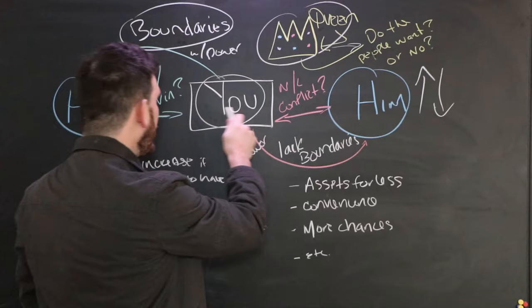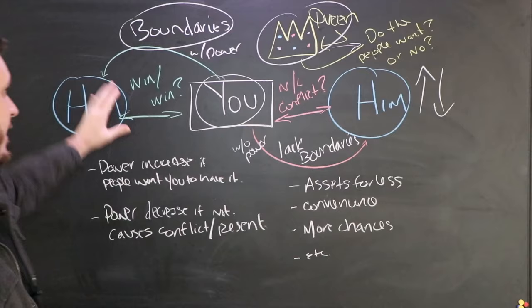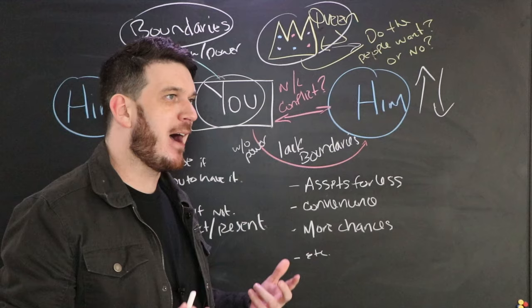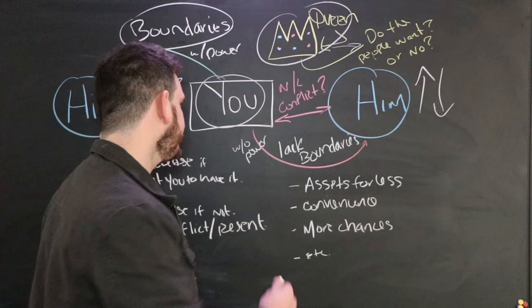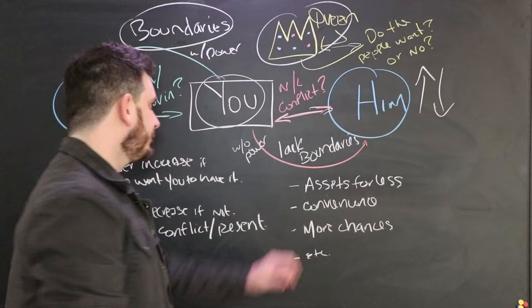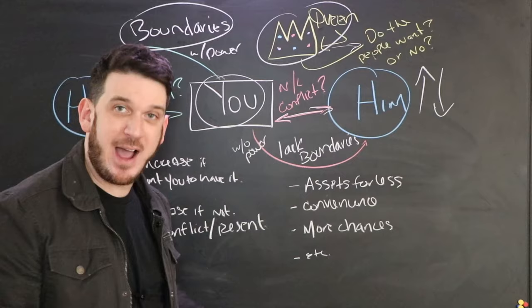Here's the thing: we have two paths. We have the path where you do have power and the path where you don't have power. A lot of times, if you study my material, I seem a little cynical when it comes to people and relationships and intentions.